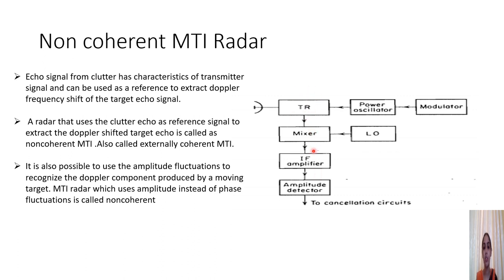There is no need for a phase detector or phase canceller circuit. An amplitude detector is used instead, and its output can be given to cancellation circuits. A radar that uses a clutter echo as the reference signal to extract the Doppler-shifted target echo is called a non-coherent MTI, also called externally coherent MTI. It is also possible to use amplitude fluctuations to recognize the Doppler component produced by a moving target.